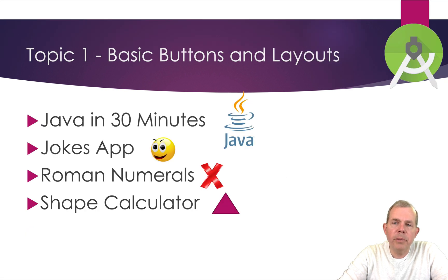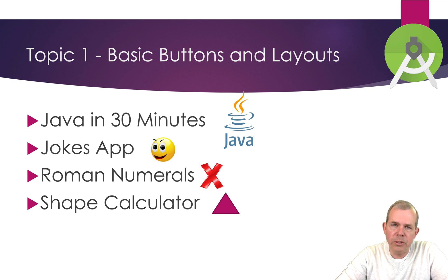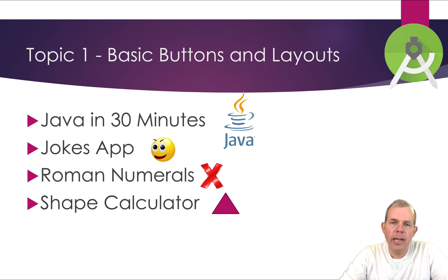Now let's look in detail at some of the programs we're going to build for each unit. In topic one, we'll do four things: we'll create a lesson that teaches the basics of Java in 30 minutes, just in case you don't know Java. We'll create a jokes app that shows jokes and their answers. We'll do a Roman numeral conversion program using a separate class to do math in the background. Then there's a challenge called a shape calculator where you'll build a math formula to calculate the perimeter and area of various shapes. The point of all these is to learn how to work with basic buttons and layouts in a simple application.